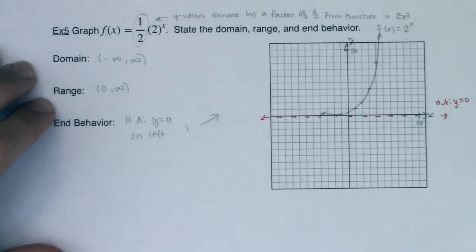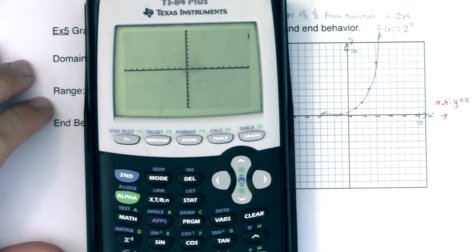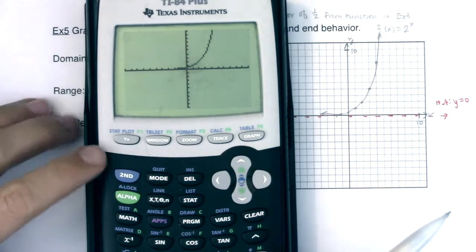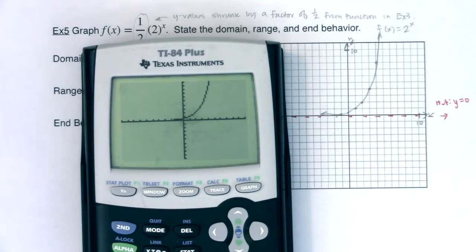And if I wanted to see what this graph looks like, I can just graph it, zoom 6. It's going to look pretty similar to what I have on my paper. That's it. There's my exponential growth function. So with that, we're going to flip the page and keep on going with transformations. I'll see you in a bit. Bye bye.